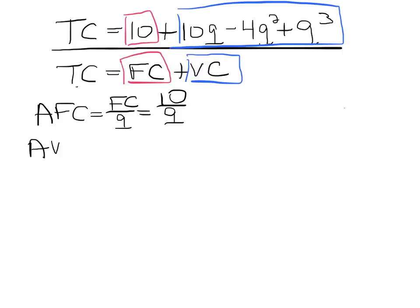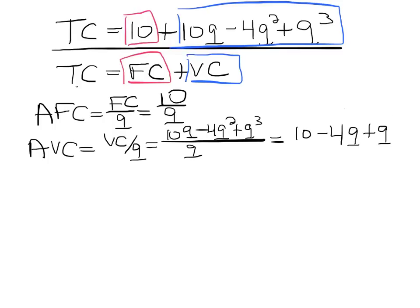The average variable costs are going to be equal to the variable costs divided by output, and that's going to be 10q minus 4q square plus q cube, all of that over q. So you end up with 10 minus 4q plus q square.